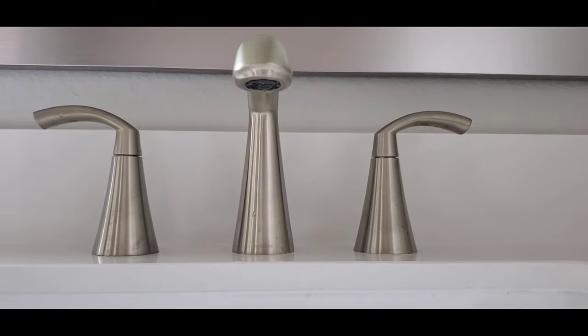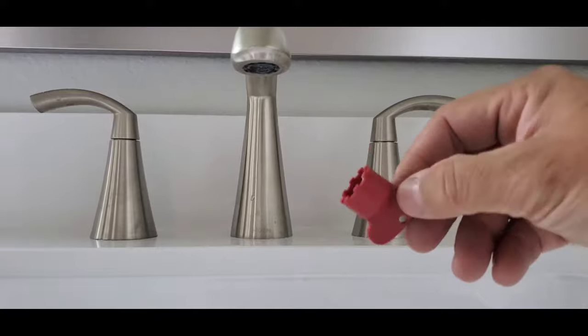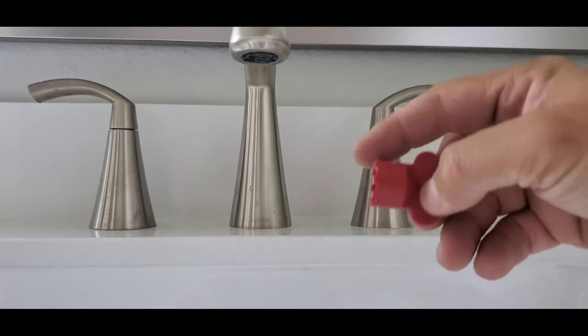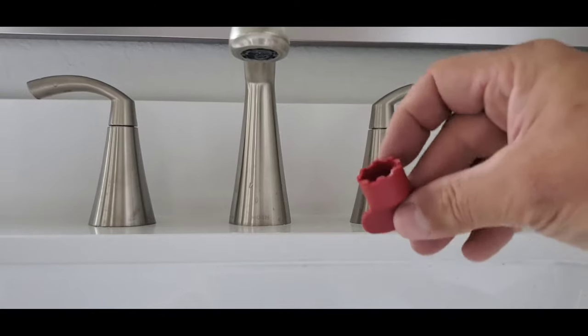So to remove a hidden aerator like this, you're going to need a key, and you can buy a kit with a key like this at most home improvement big box stores.